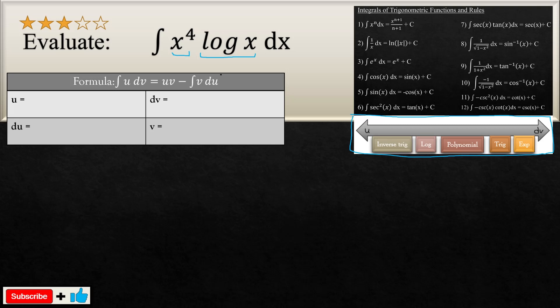Now, where does X to the power of four is? What is it? A polynomial, so it's right over here. This is X to the four. And now where's log? Well, log is right over here.